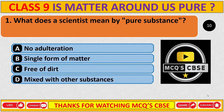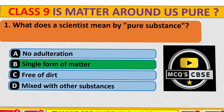What does a scientist mean by pure substance? The correct answer is B: a single form of matter.